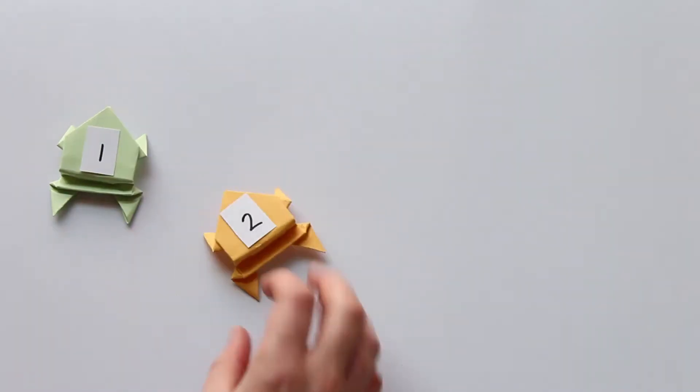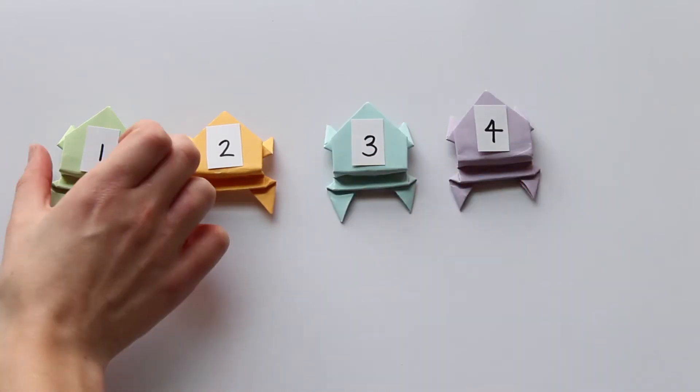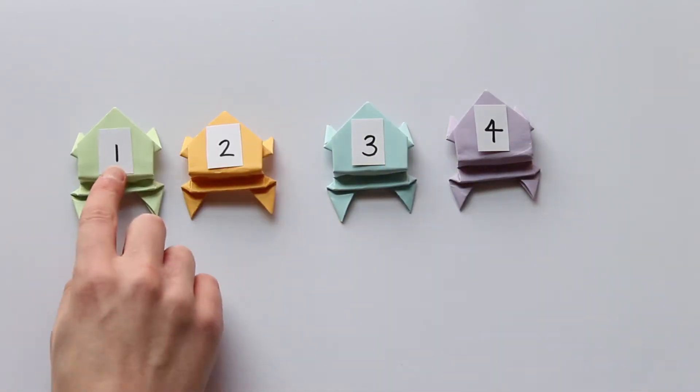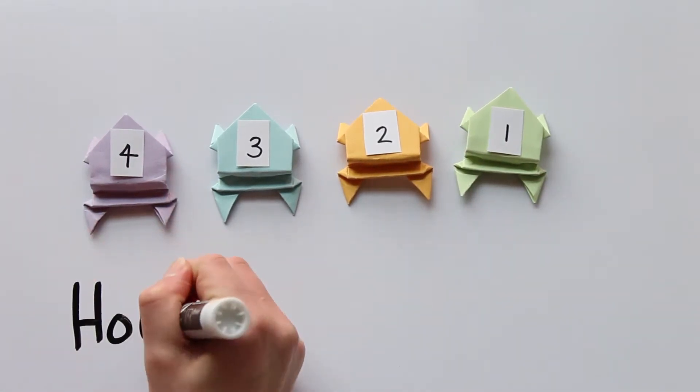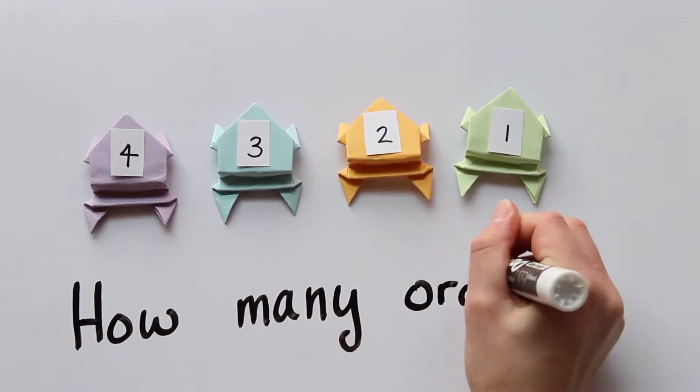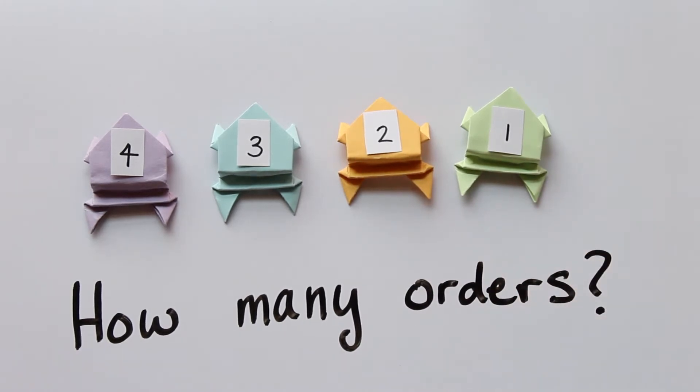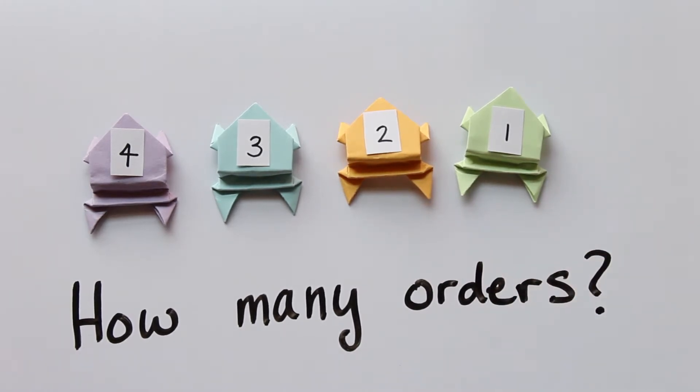I've recruited some friends to help me out. Instead of rearranging squares on a Rubik's Cube, let's think about rearranging these paper frogs. We can put them in whatever order we want. So I'm wondering how many ways can we do this? To make an order, I start by picking the first frog, and then the second frog, and then the third, and finally the fourth.